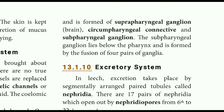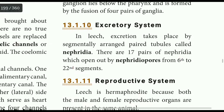Excretory system: excretion is by nephridia. There are 17 pairs of nephridia located in segments 6 to 22. They excrete through nephridiopores.